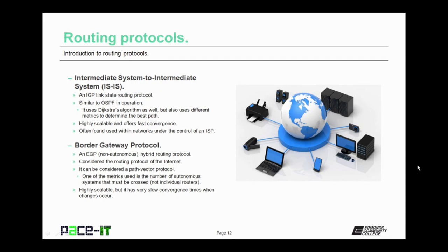Next up, Intermediate System to Intermediate System, or IS-IS. IS-IS is a link state routing protocol, like OSPF, and similar to OSPF it also uses the Dijkstra algorithm, but it uses different metrics to determine the best path. IS-IS is highly scalable and offers fast convergence. IS-IS is often found within networks under the control of an internet service provider.